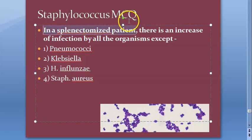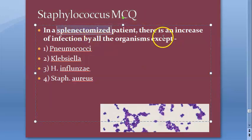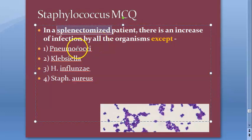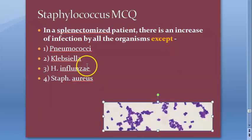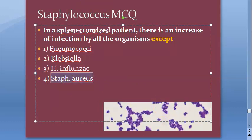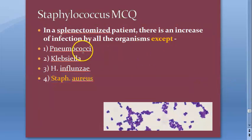In the splenectomized patient there is an increase in infection by all organisms except. Splenectomized patients fear pneumococcal, Klebsiella, and H. influenzae infections. Staph aureus is not something they particularly fear — so staph aureus is the answer.